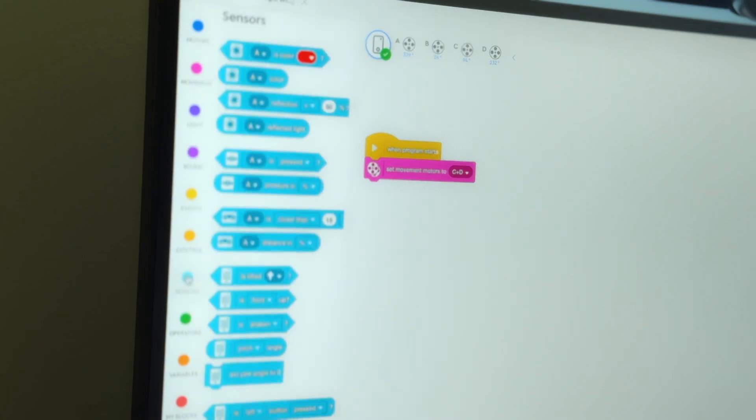Now let's dive into the programming. We'll follow a systematic approach to this SPIKE Prime block-based program. Step number one, reset your gyro sensor. Let's go into sensors and drag and drop the reset yaw angle to zero block onto our workspace.